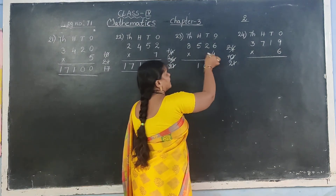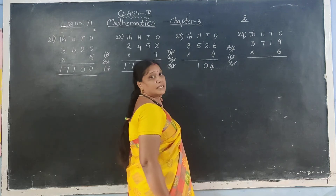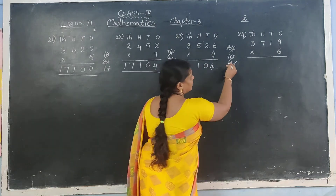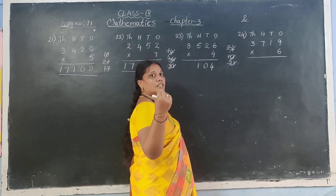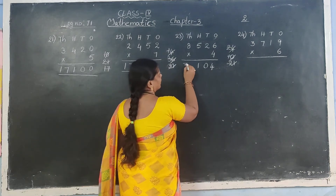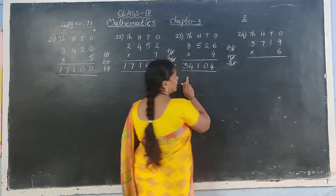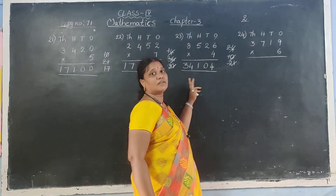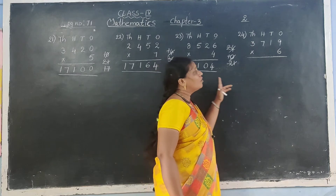Next: 4 eights are 32. Carry number 2 is there: 32 plus 2 is 34. Direct write in answer. The product is 34,104.